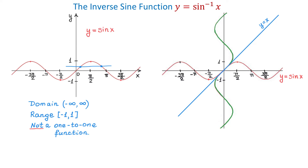However, the problem is that this graph does not represent a function because it does not pass the vertical line test. The vertical line test tells us that if we draw a vertical line over a graph and if this line crosses the graph in more than one point, then the graph does not represent a function. So then how can we find the inverse of the sine function?